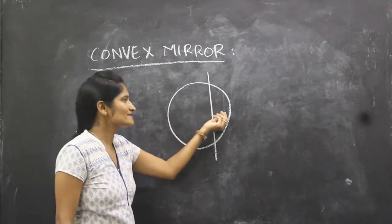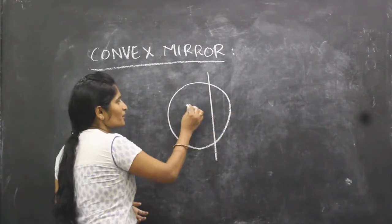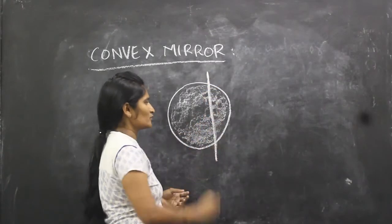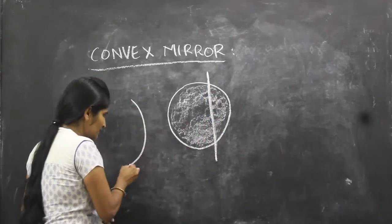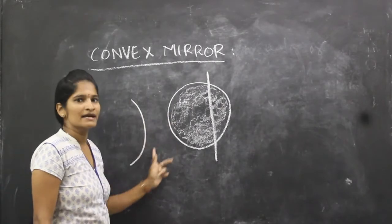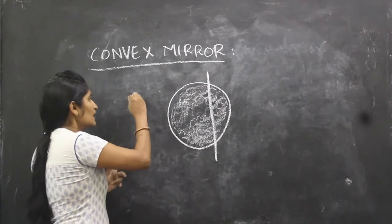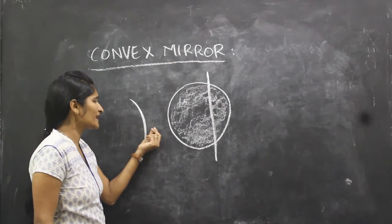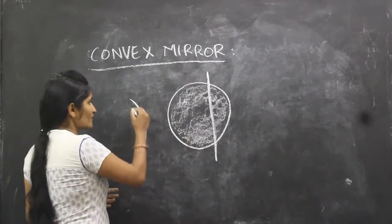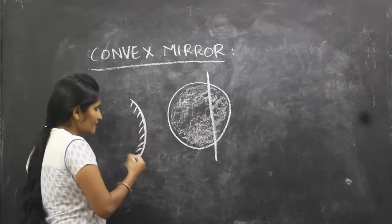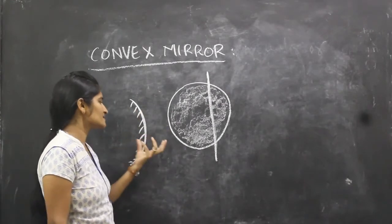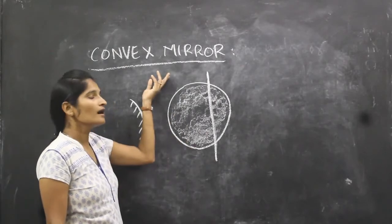How do we identify which part is convex? Suppose you paint the sphere inside and cut a part of it. The painted part will be on one side and the other part will be smooth and reflecting in nature. So the part of a sphere which reflects from the outside surface is called a convex mirror — the inside is painted and the outer, bulged surface is the reflecting surface.